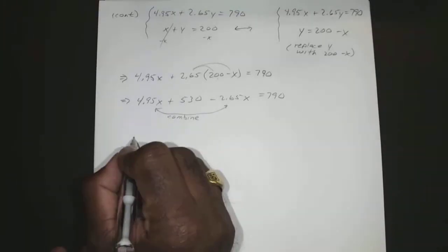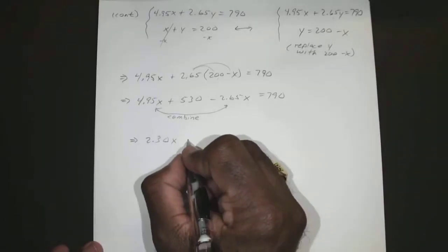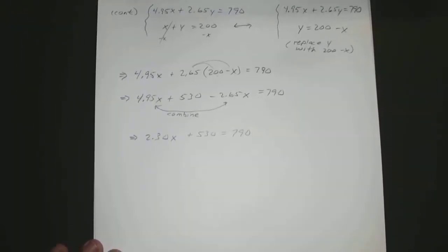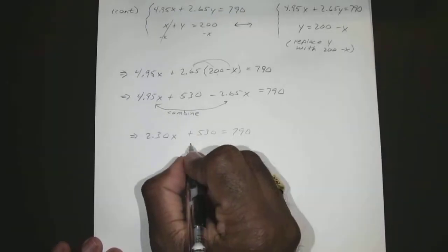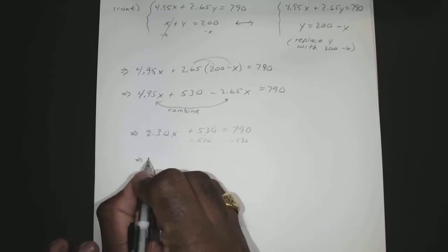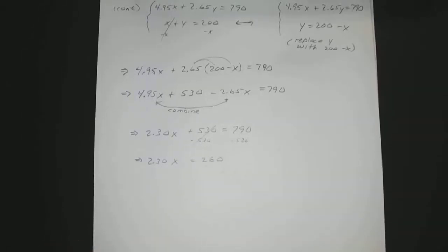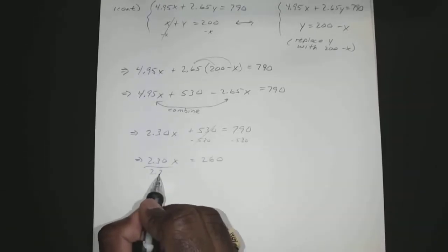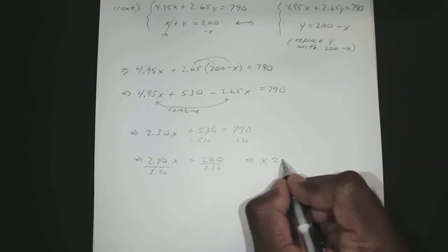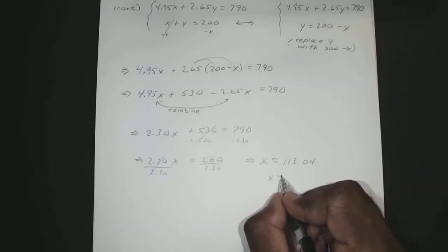So 495 minus 265 is positive 230, plus the 530 that's still here, equals 790. So now we subtract 530 from both sides. That gives us 230X equals 260. So if we divide both sides by 230, it gives us X equal to about 113.04 — which we wanted rounded to the nearest pound — so X is just equal to 113.